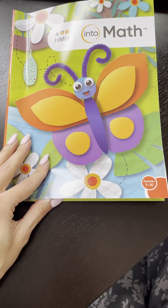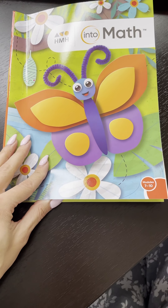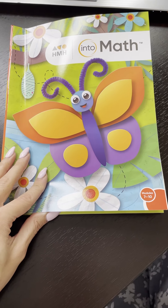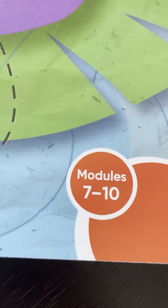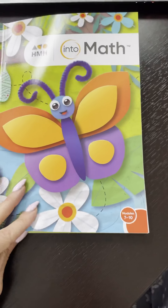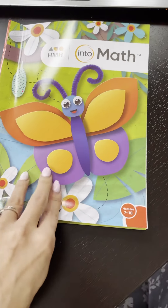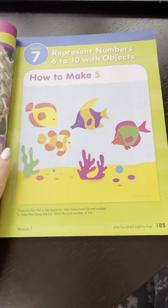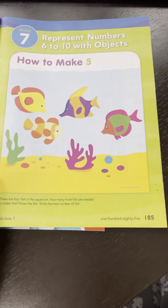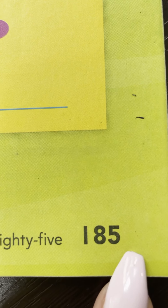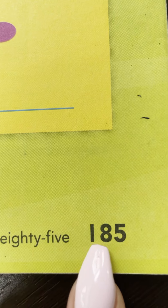Happy Monday kindergarten, and welcome to today's math. Today you're going to need to get out your new math workbook that shows modules 7 to 10, because we finished the last math workbook. So you're going to get out this new one and open the book to page 185.